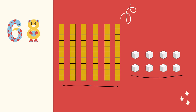So, how many tens and ones are in 68? Let's count: 1, 2, 3, 4, 5, 6. There are six rods of tens. And 1, 2, 3, 4, 5, 6, 7 and 8 — eight units of ones. Six rods of tens and eight units of ones. Excellent.